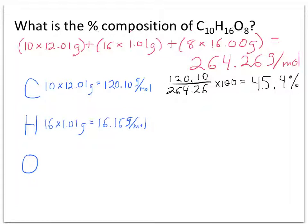Now let's do hydrogen. Hydrogen makes up 16.16 grams per mole of the total compound. Its percentage, then, is 6.1% by mass. Notice this is not based on the number of atoms, but by the total mass of that atom.